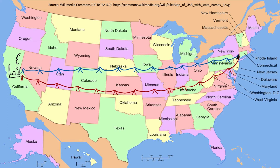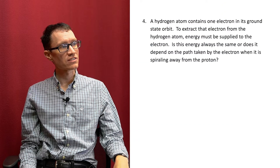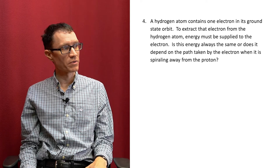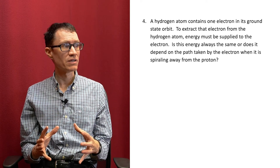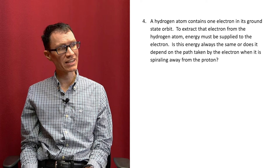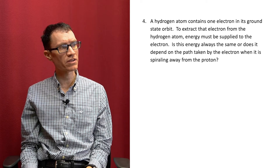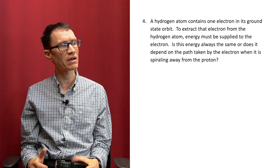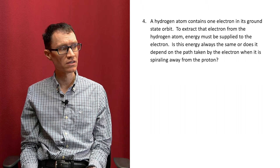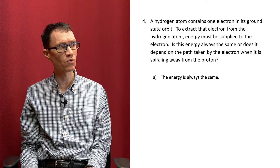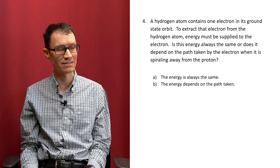Let's move on to question 4. A hydrogen atom contains one electron in its ground state orbit. To extract that electron from the hydrogen atom, energy must be supplied to the electron. Is this energy always the same, or does it depend on the path taken by the electron when it is spiraling away from the proton? A: The energy is always the same. Or B: The energy depends on the path taken.